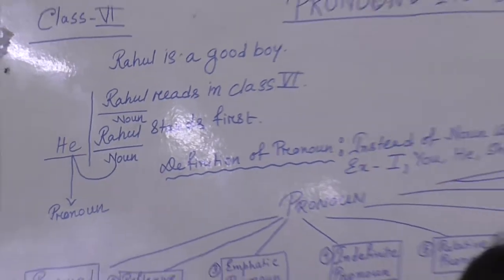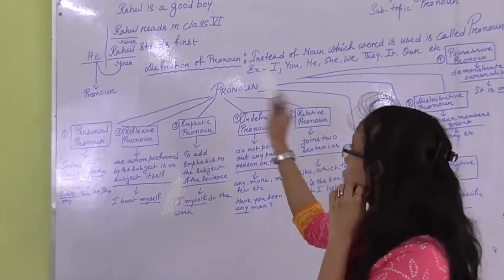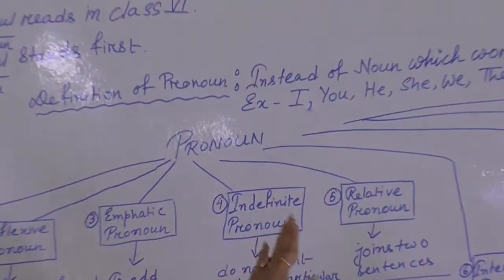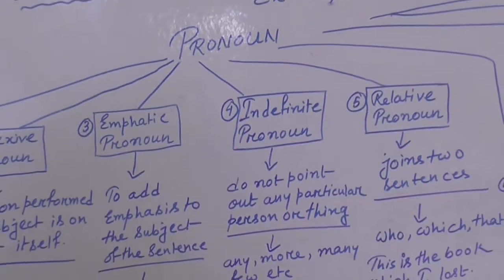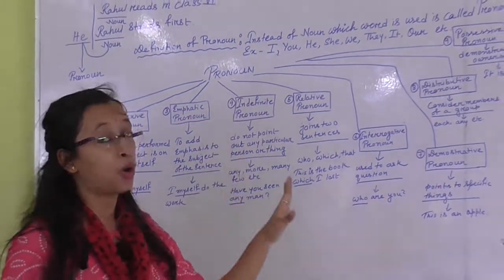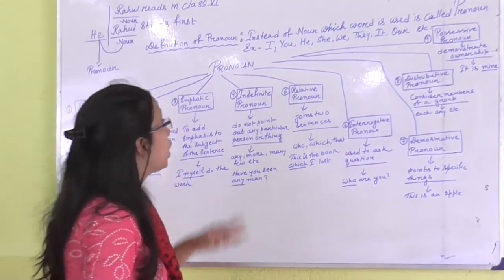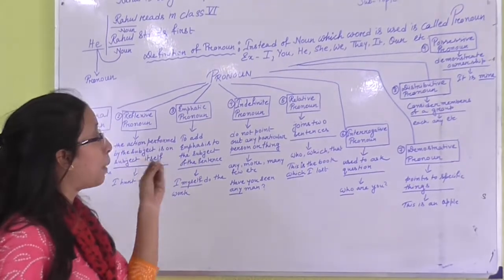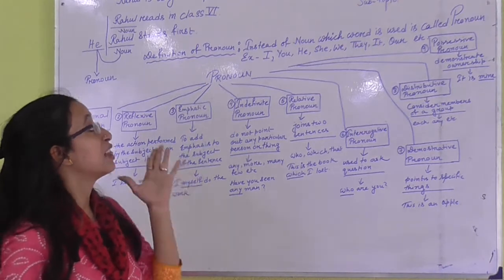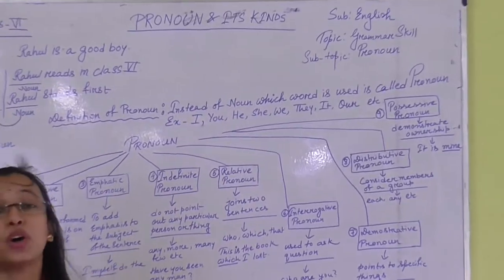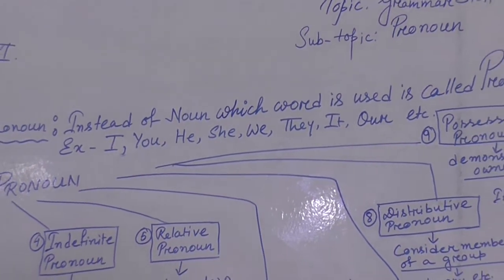From this example we can easily go to the definition. Instead of noun, the word which is used is called pronoun. For example: I, you, he, she, we, they, it, our, etc. — all words used instead of a noun are pronouns.